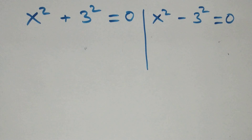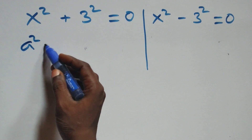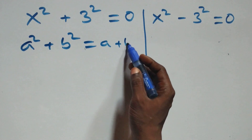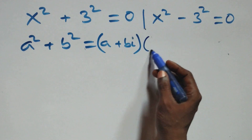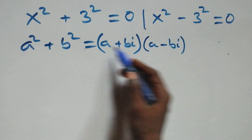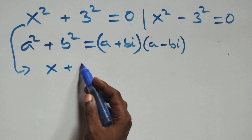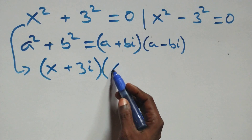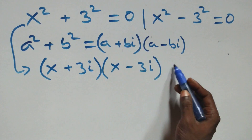Solving from the first case, x squared plus three squared equals zero. This follows a squared plus b squared equals (a + b)(a − b). So it becomes (x + 3i)(x − 3i) equals zero.